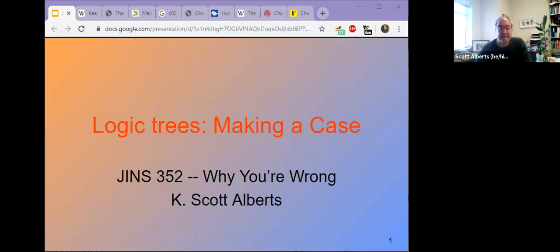Okay, this is our second lecture for GENS 352, and it talks about how we build a logical chain or a logical tree in order to make a case, in order to hopefully convince someone to change their mind when they're wrong.